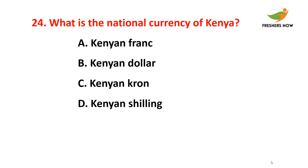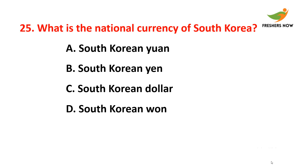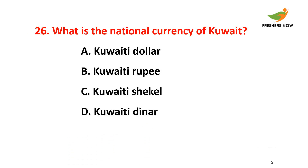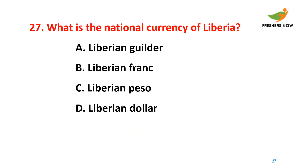Twenty-third question: What is the national currency of Kazakhstan? The answer is option B — Kazakhstani tenge. Twenty-fourth question: What is the national currency of Kenya? The answer is option D — Kenyan shilling. Twenty-fifth question: What is the national currency of South Korea? The answer is option D — South Korean won.